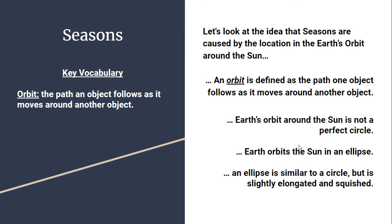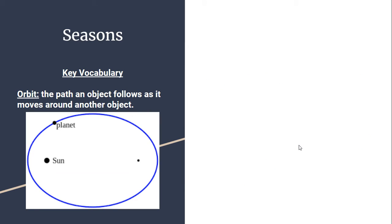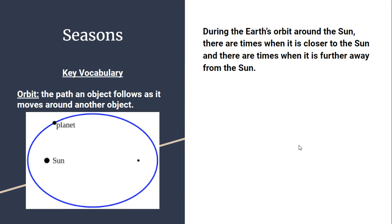An ellipse is kind of like a circle, but it's been elongated in some sections and squished in others. In this diagram in blue, you can see a perfect circle — everywhere around it is two and a half units away from the center. Whereas the ellipse in red is elongated to three units along the X axis and shortened to two on the other sides. This means there are times when Earth is closer to the Sun in its orbit and times when it's farther away.